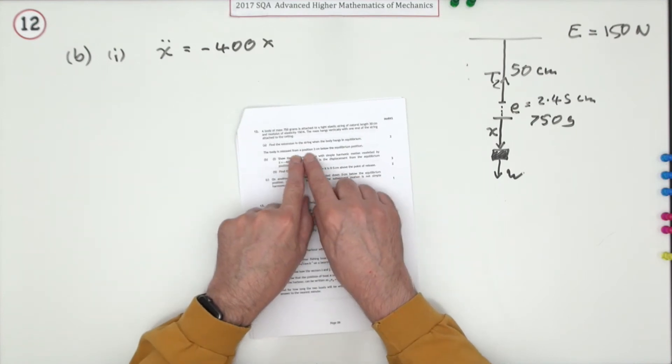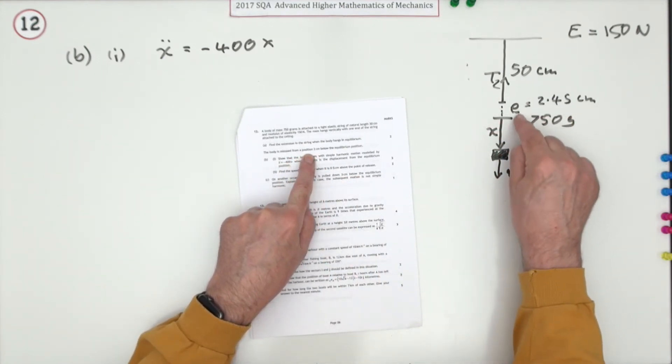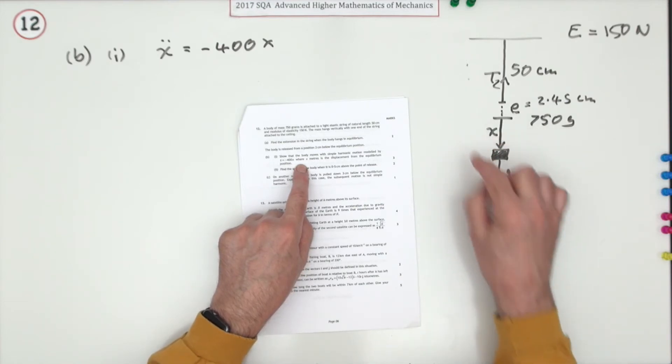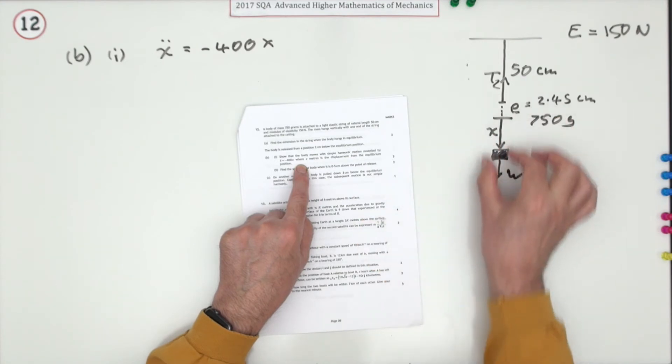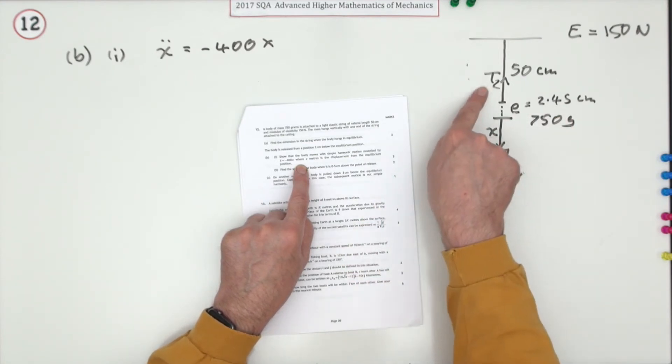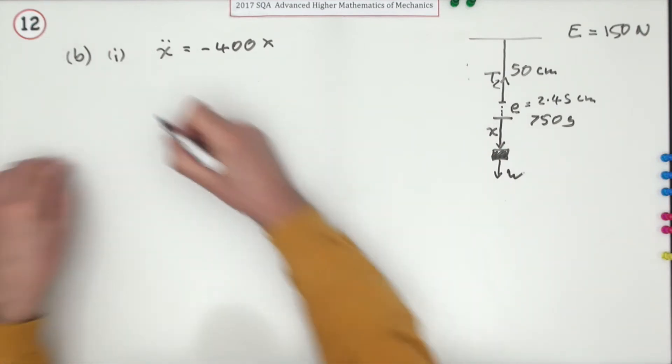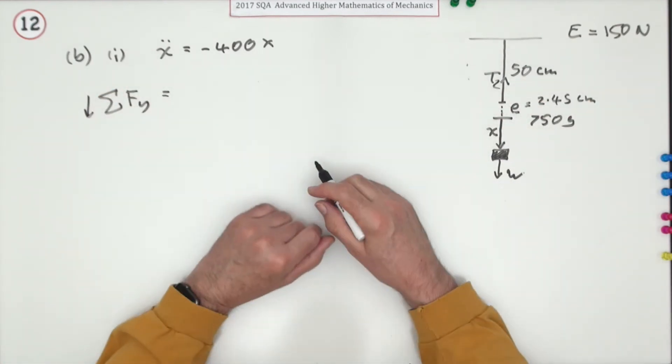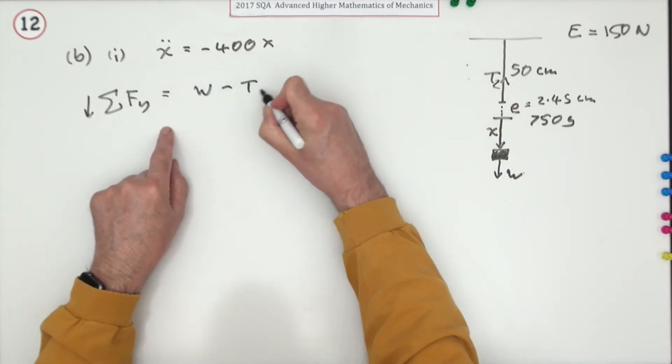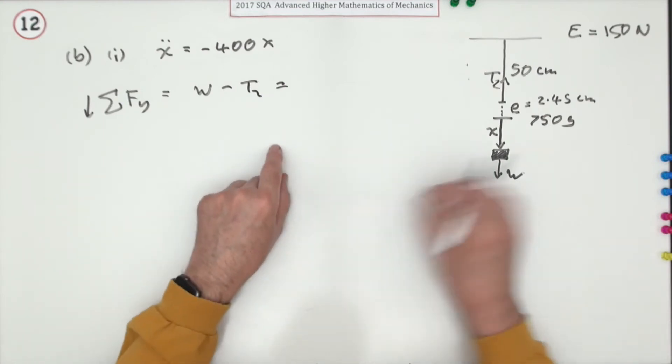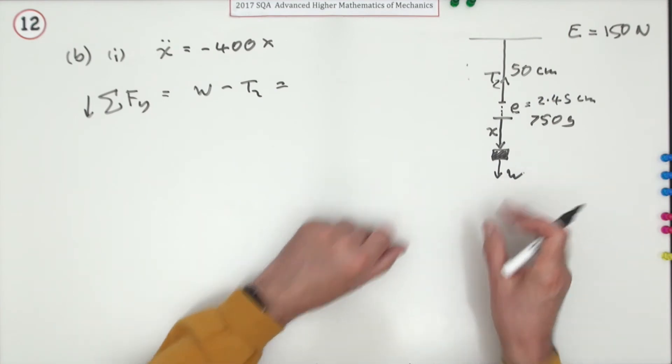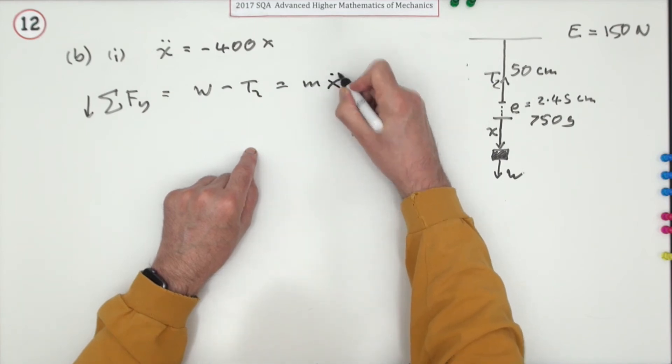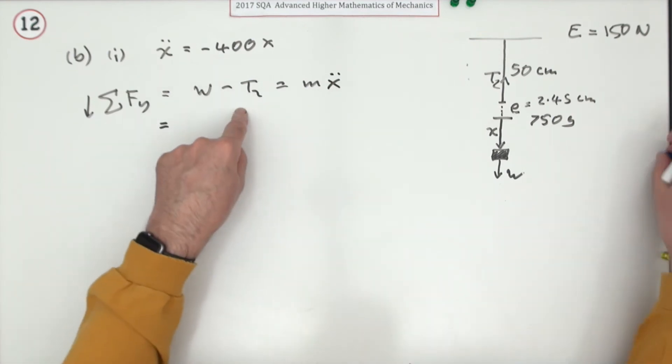Part b: a body is released from a position two centimeters below the equilibrium, so it's been pulled down and released. You have to find its motion x meters when x is displacement below the equilibrium position. There's the new diagram, the tension is going to increase. Sum of the forces in the y direction - I'll go down the way because that's how the displacement's been measured. You've got the weight minus the tension doesn't equal zero because you were holding it down at two centimeters and then you release it, so that tension is greater than the weight and that will result in an acceleration m times a, using x double dot for a. There's your first mark for realizing there's an unbalanced force so it's going to accelerate.